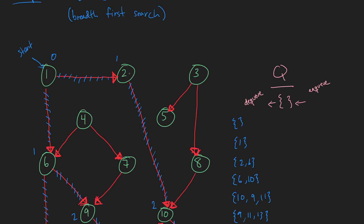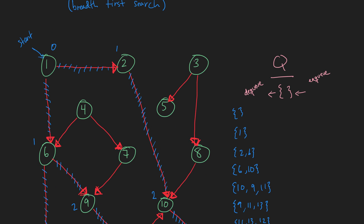We still have undiscovered nodes. The next node is 2, but it's already been discovered, so we skip it. Node 3 has not been discovered yet — its color would be white. So we start a new BFS from node 3 with a distance of 0, enqueue it, then dequeue it and enqueue its adjacency list: 5 and 8, both at distance 1.